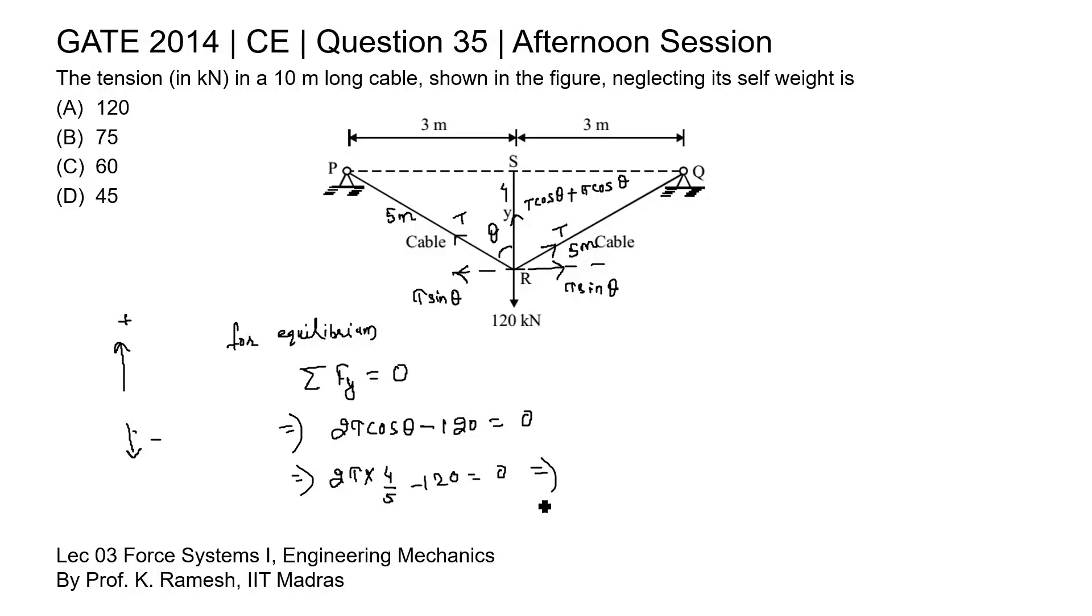And if we further solve this equation we will get T as 75 kilonewton. We got the tension in the cable is 75 kilonewton which is given in option B. Option B is the correct answer for this question. Thank you.